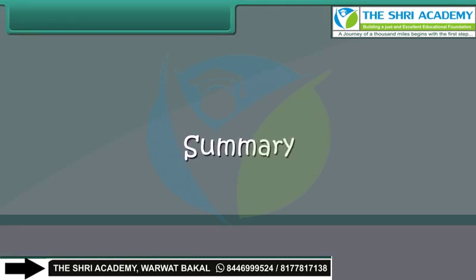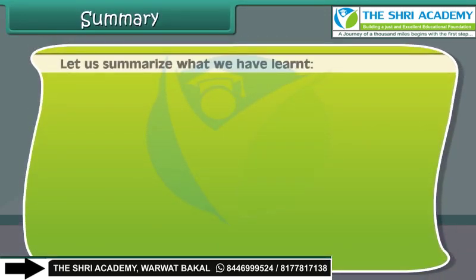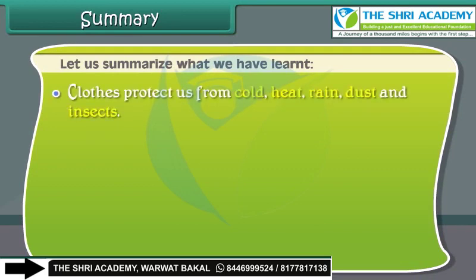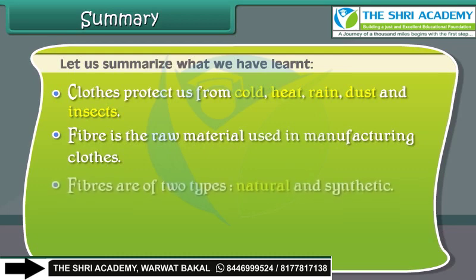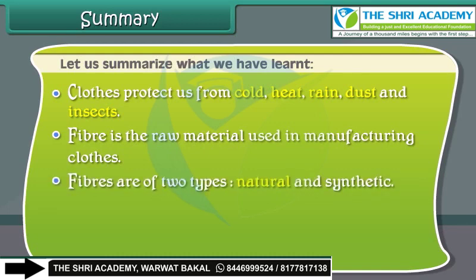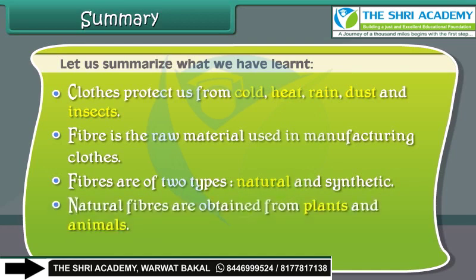Let us summarize what we have learned. Clothes protect us from cold, heat, rain, dust and insects. Fiber is the raw material used in manufacturing clothes. Fibers are of two types: natural and synthetic. Natural fibers are obtained from plants and animals. Synthetic fibers are man-made.